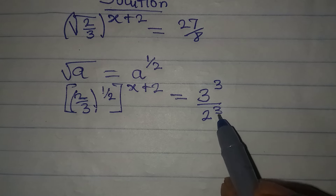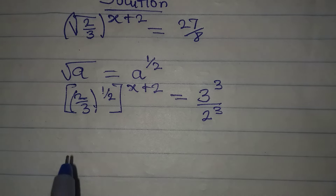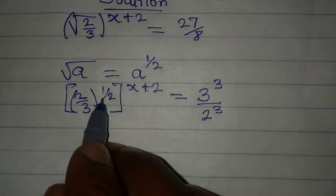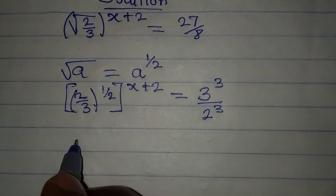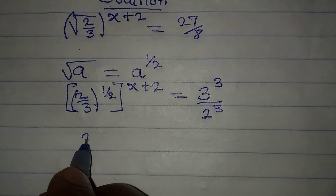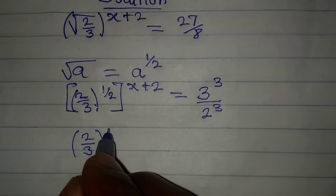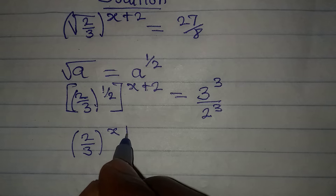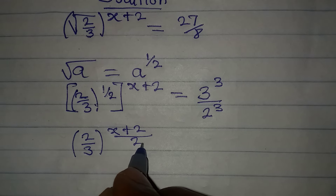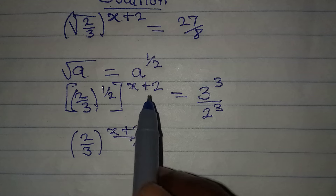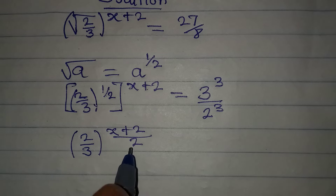Since we have two powers like this, we multiply them. So we are going to have 2 over 3 to the power of x plus 2 over 2 — because multiplying anything by one half is the same as dividing it by 2.